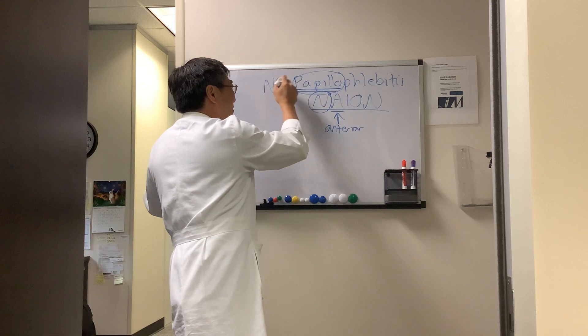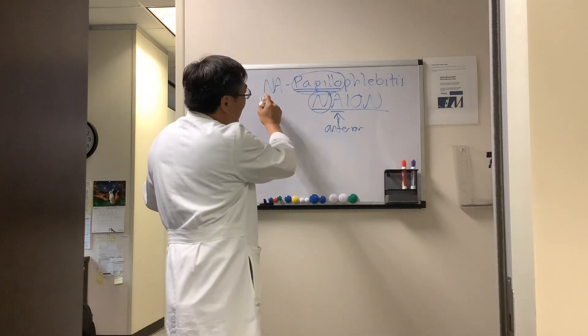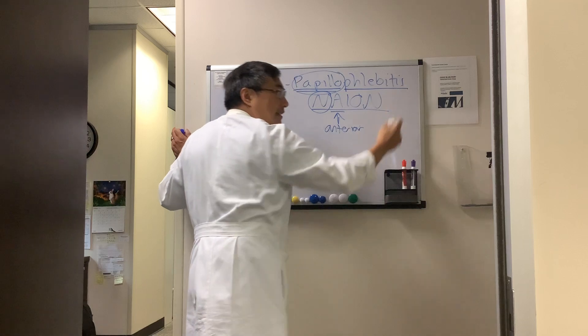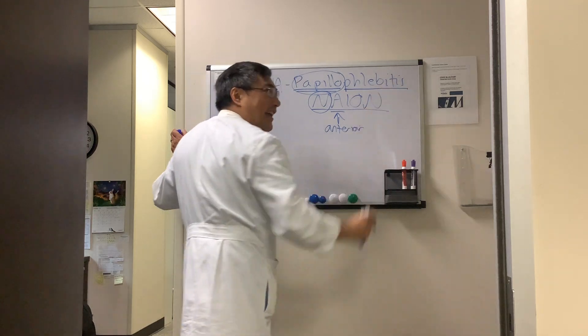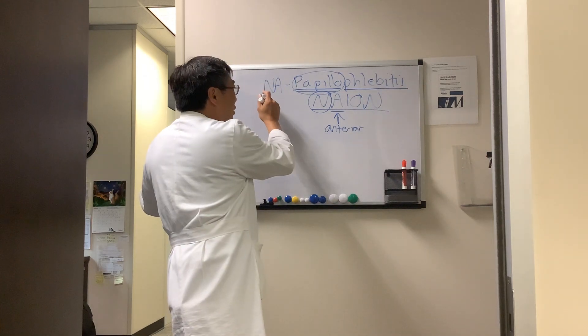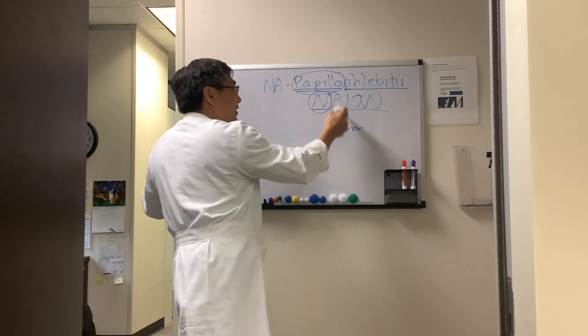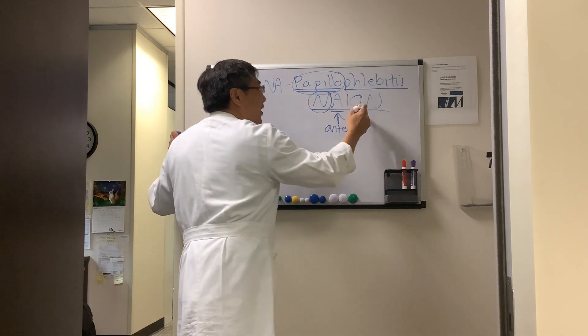They're both non-arteritic. So really, this is non-arteritic papilloflebitis because giant cell is an arterial disease and doesn't affect the vein, and that is a vein inflammation. So they're both non-arteritic, they're both anterior, and they both involve the optic nerve.